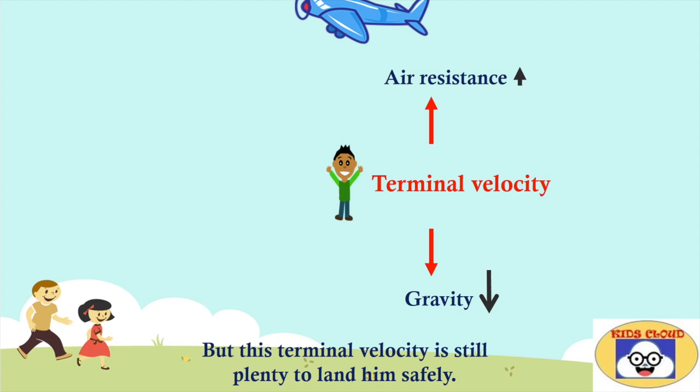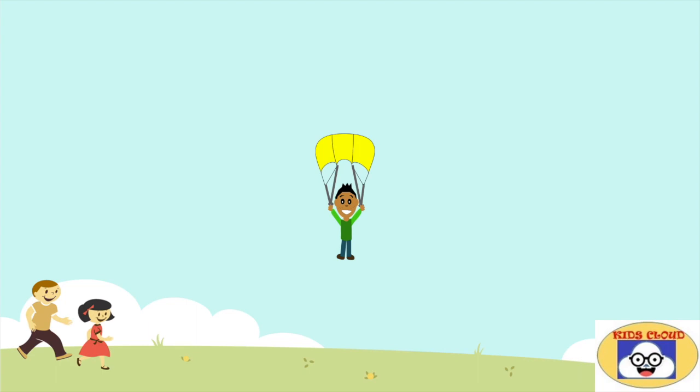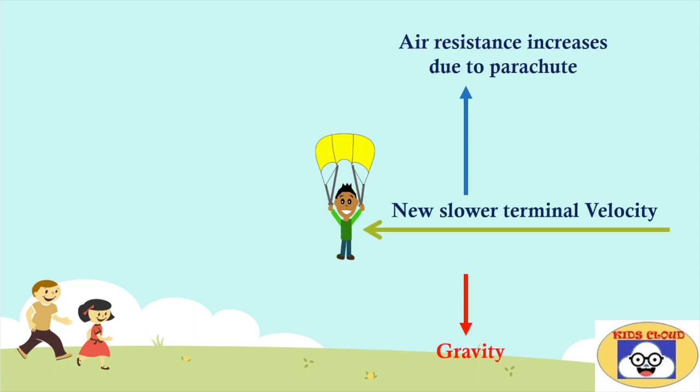But this terminal velocity is still plenty to land him safely. The skydiver opens his parachute. It increases air resistance further, and he reaches a new slower terminal velocity. It makes him land safely on the ground without any injury.